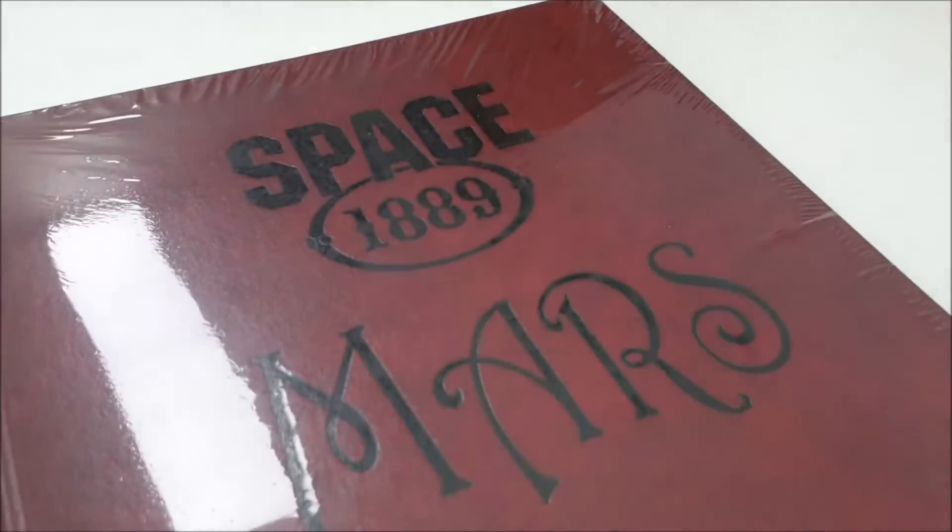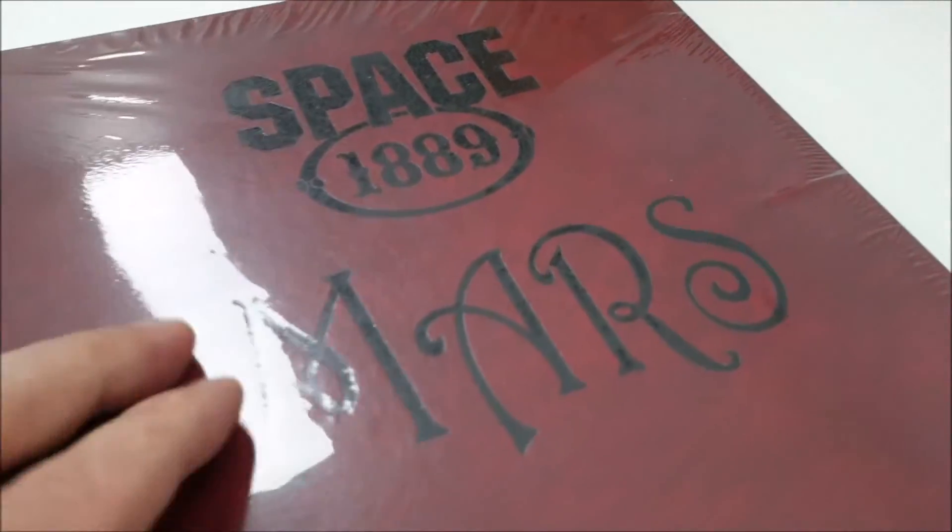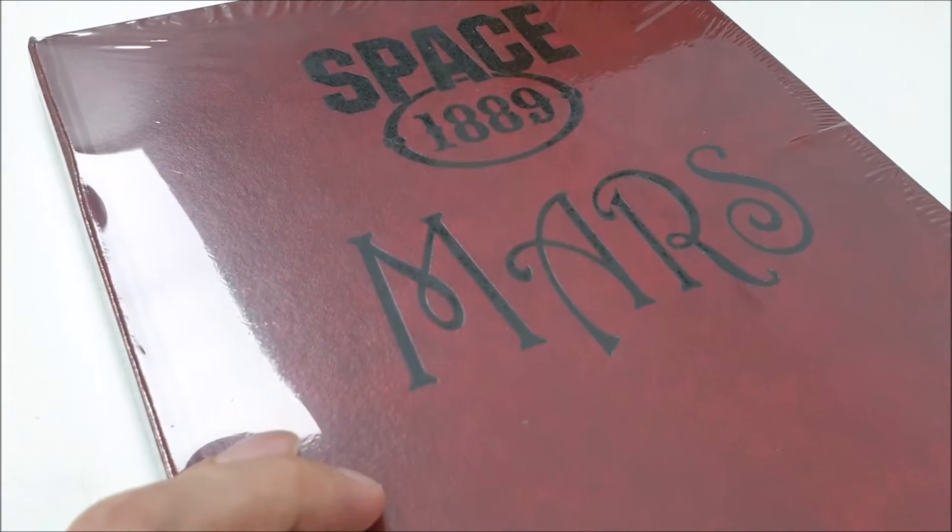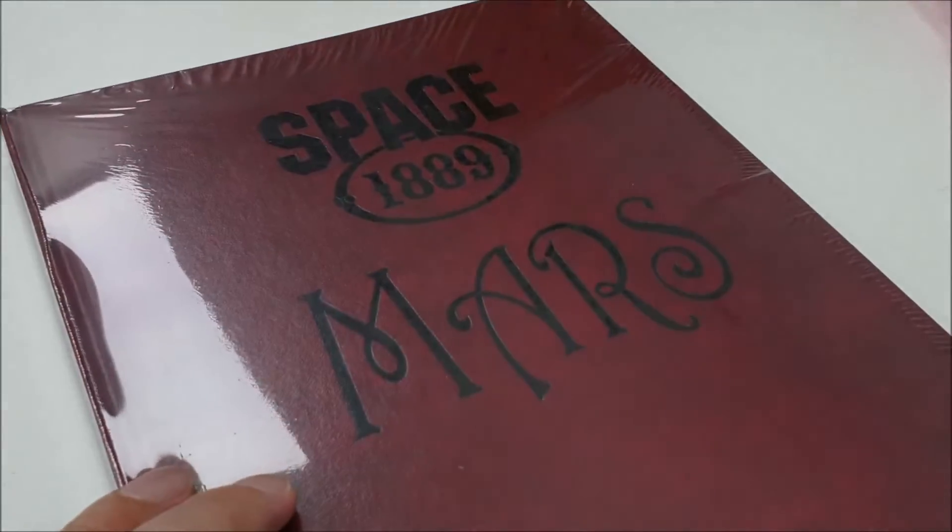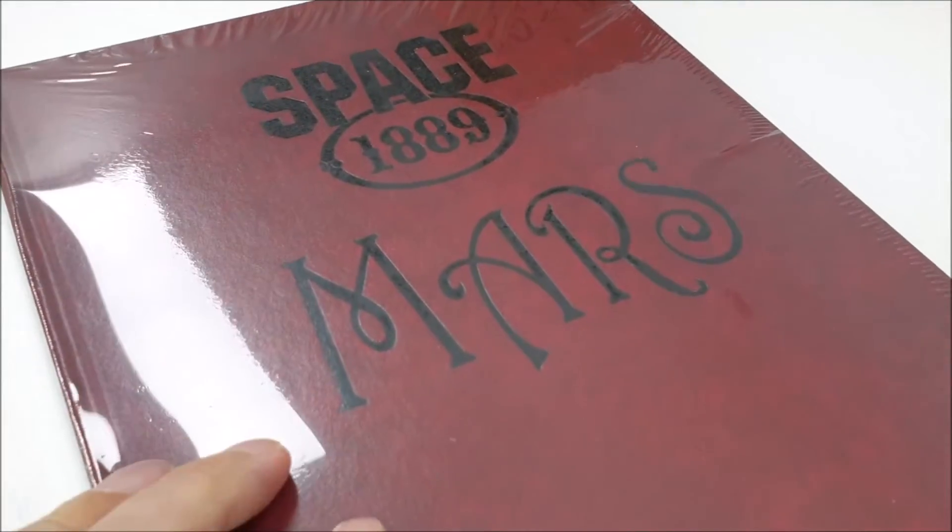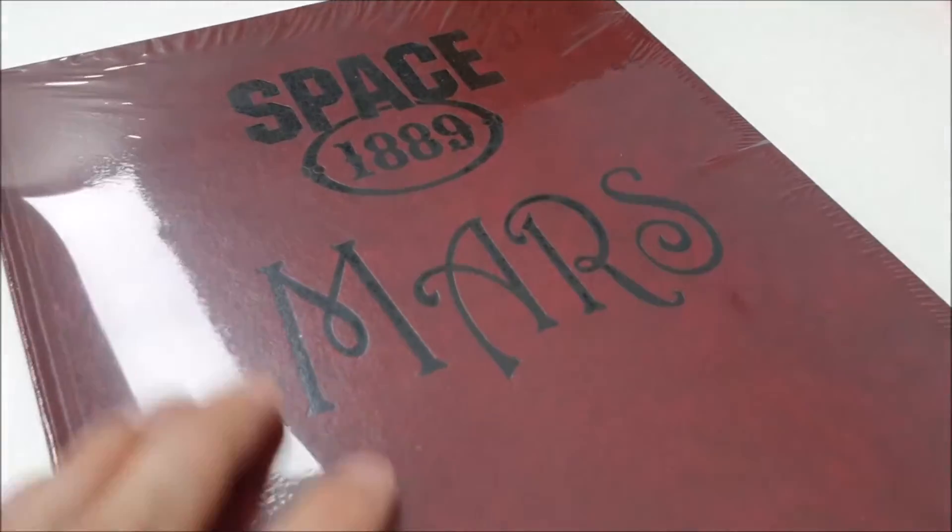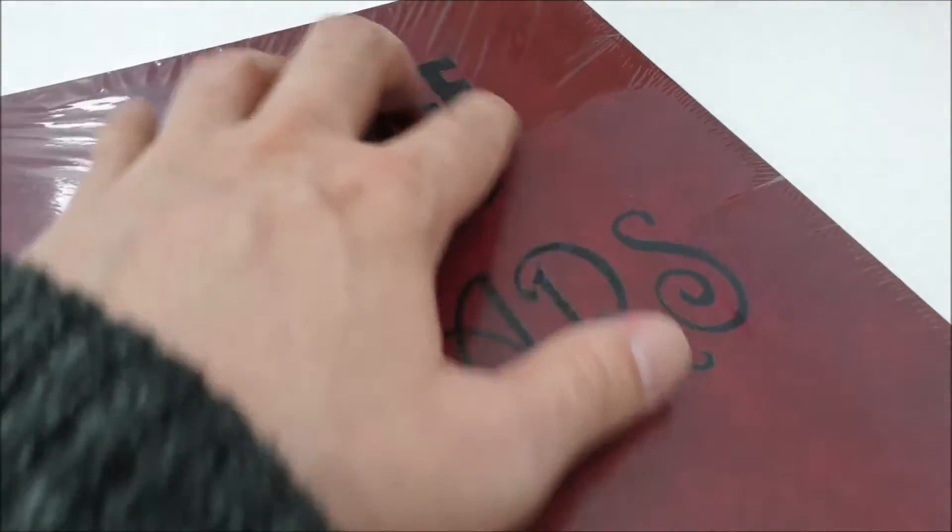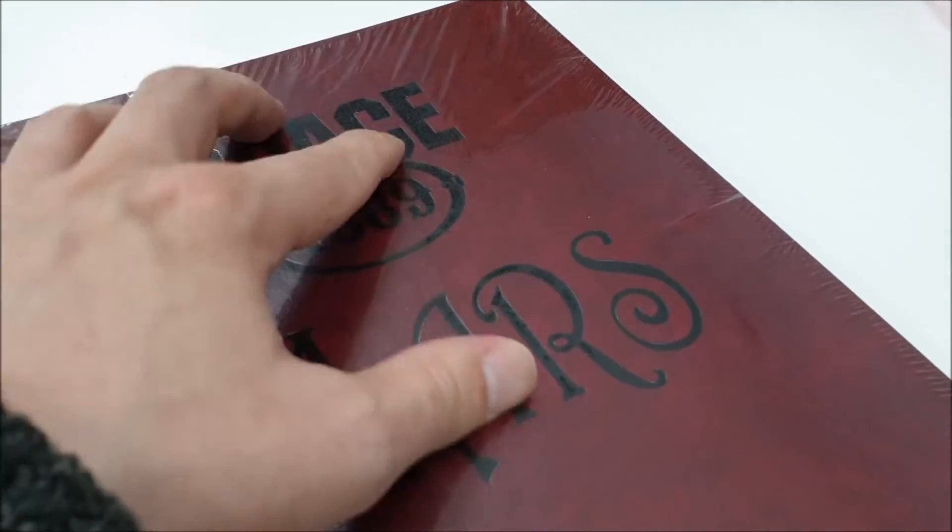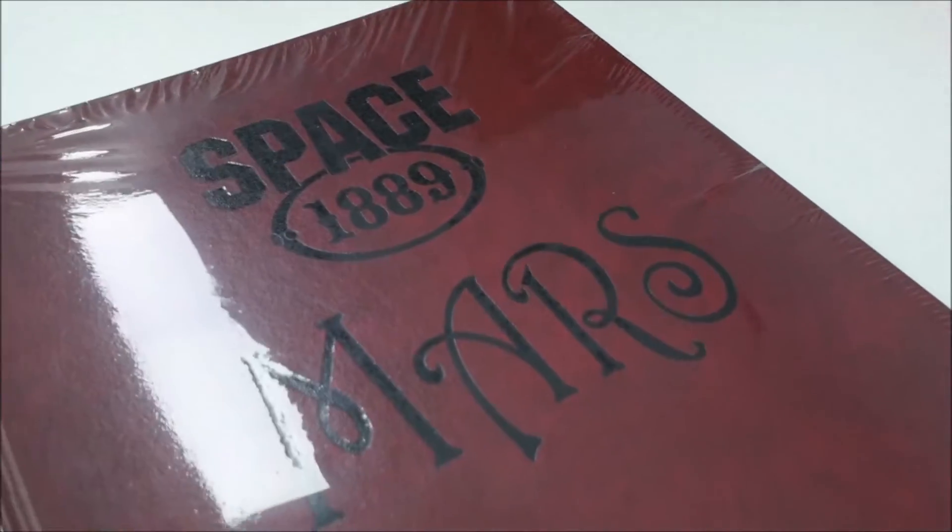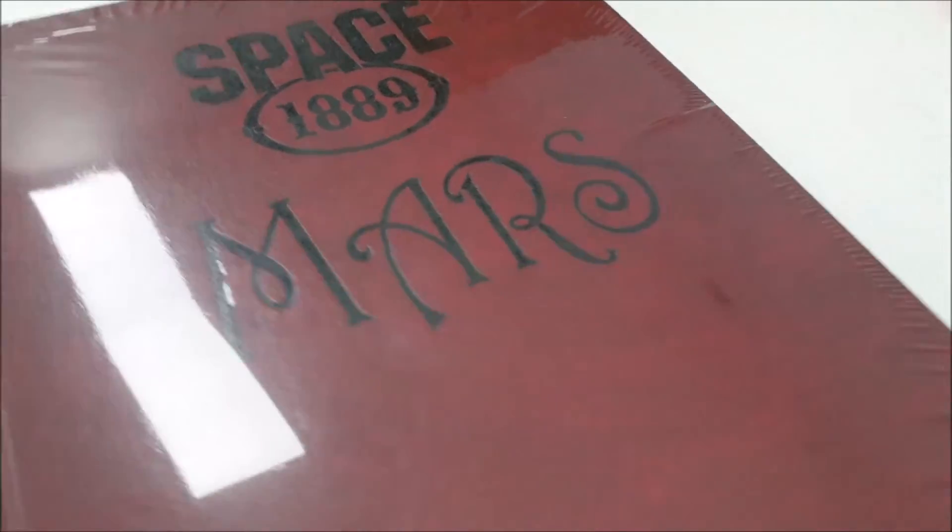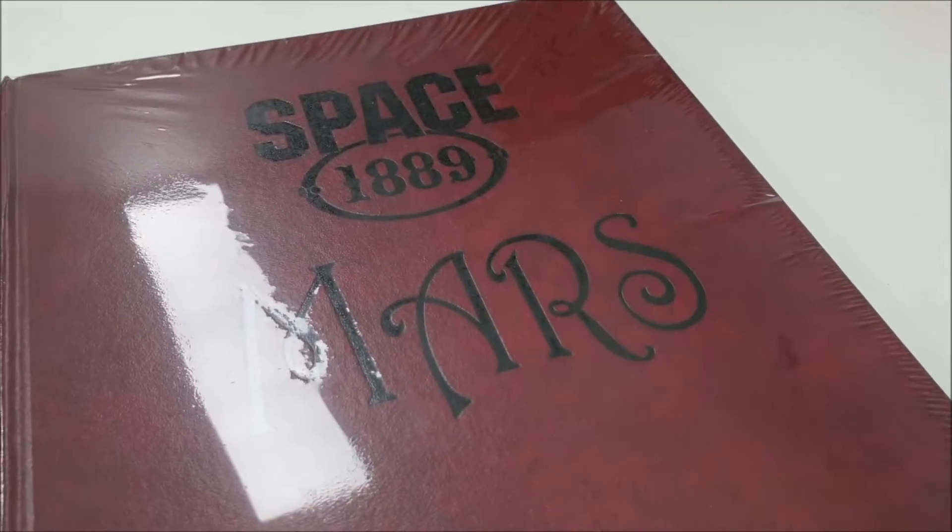So the leather for Space 1889's Core Rules was a very soft, kind of like kid glove leather. A little too soft to feel comfortable using at the table, but it feels really nice in the hand. This feels already, even through the shrink wrap, to be more durable, more usable. And the original was like it looked like a heat-treated brand seared into the leather. This is not quite so extreme as that. Still very nice.